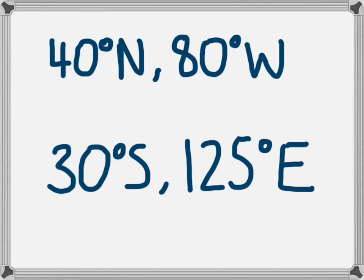This second location is obviously a place which is in the southern hemisphere and also in the eastern hemisphere. And it is 30 degrees to the south of the equator and 125 degrees to the east of the prime meridian. And this is a place in Australia.